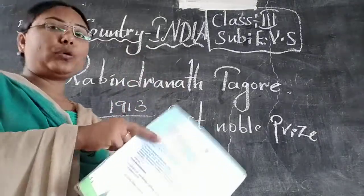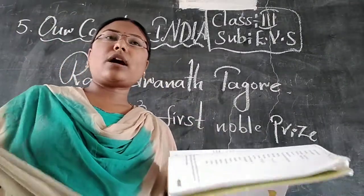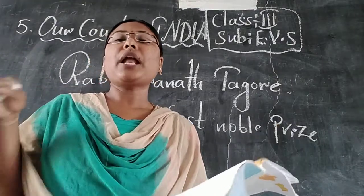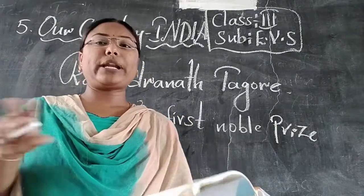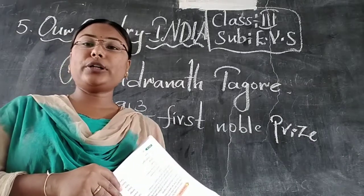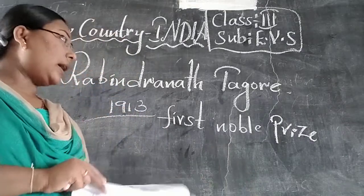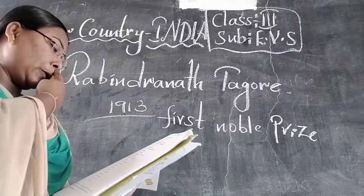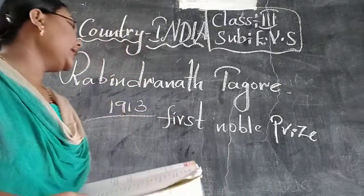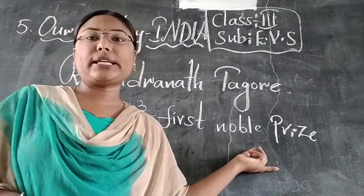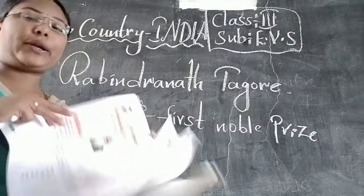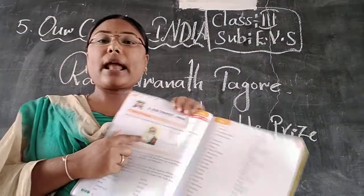In India, there are a total of 29 states, and different languages, different dressing, and different ways of food — totally different things are there. All states have different languages, different food, and different ways of styles. He is Rabindranath Tagore. What did he do for the country? He is the first Nobel Prize winner of India, in the year 1913.